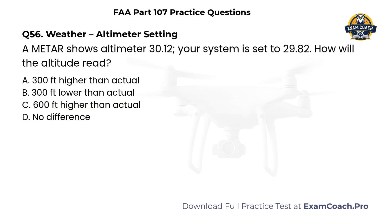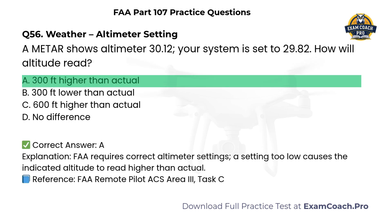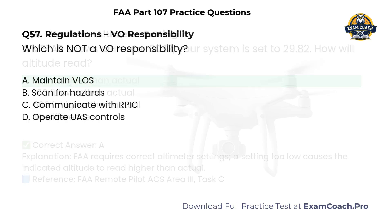Weather — Altimeter Setting. A METAR shows altimeter 30.12; your system is set to 29.82. How will the altitude read? A. 300 feet higher than actual. B. 300 feet lower than actual. C. 600 feet higher than actual. D. No difference. Correct answer: A. 300 feet higher than actual. The FAA requires correct altimeter settings; a setting too low causes the indicated altitude to read higher than actual.